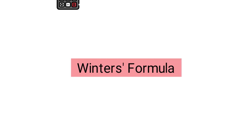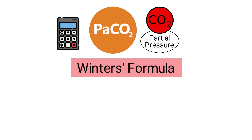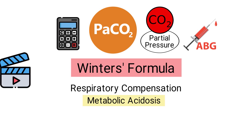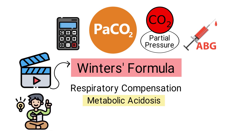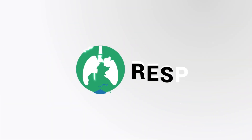Winter's formula is an equation used to calculate a patient's expected partial pressure of carbon dioxide based on their arterial blood gas results. The formula is used to evaluate respiratory compensation in response to metabolic acidosis. In this video, we're going to break down Winter's formula in a way that's easy to learn and understand, walking through each part of the equation so you'll know exactly what each parameter means.